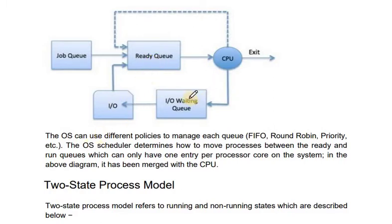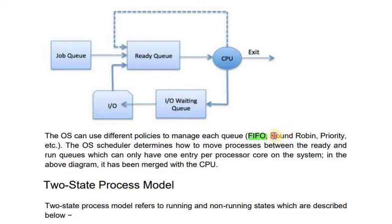This is simply process scheduling. The OS can use different policies to manage each queue — such as FIFO (first in, first out), round robin, priority, and so on. The OS scheduler determines how to move processes between the ready queue and the run queue, which can only have one entry per processor core on the system.